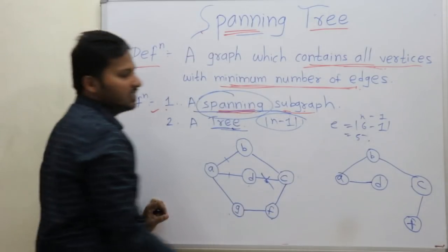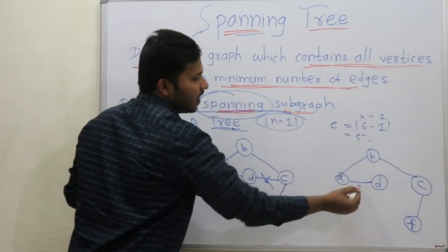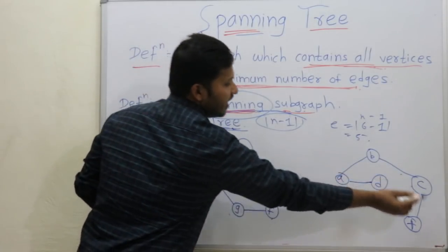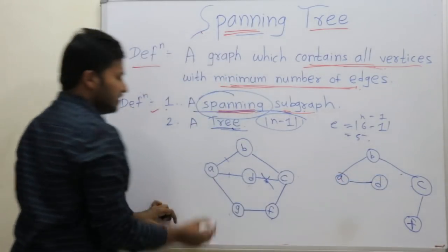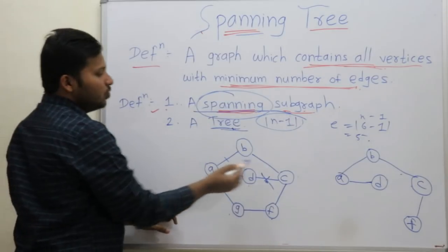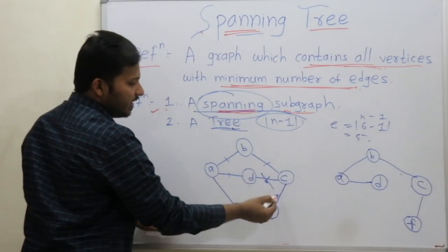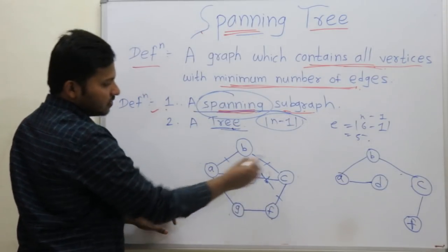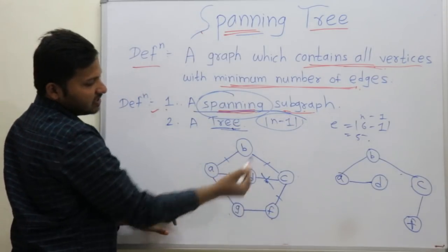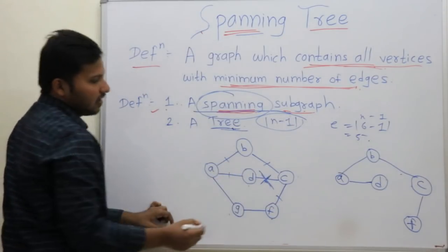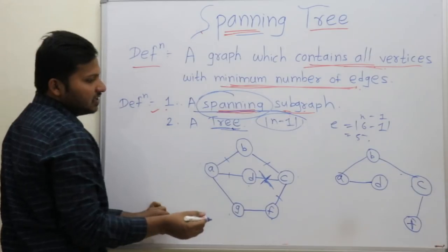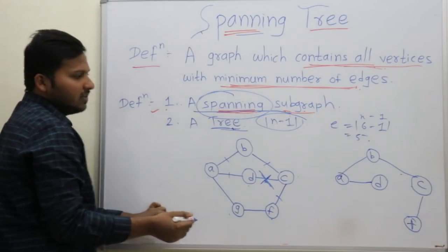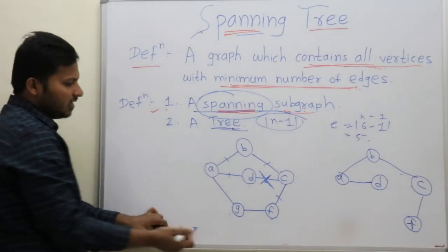How many edges are over? 1, 2, 3 and 4. These are the edges taken. Now the final edge — you can take any edge.